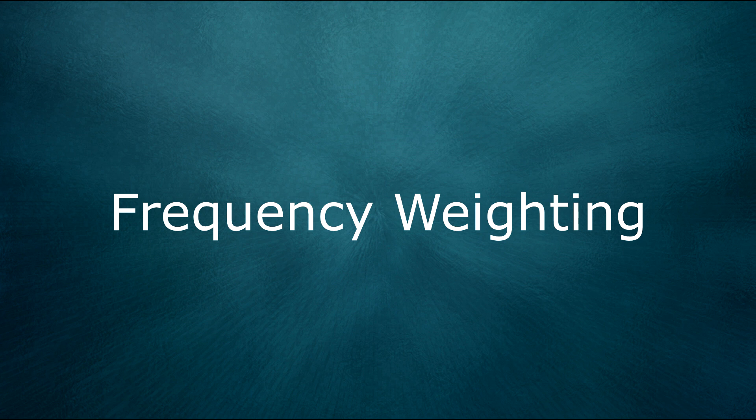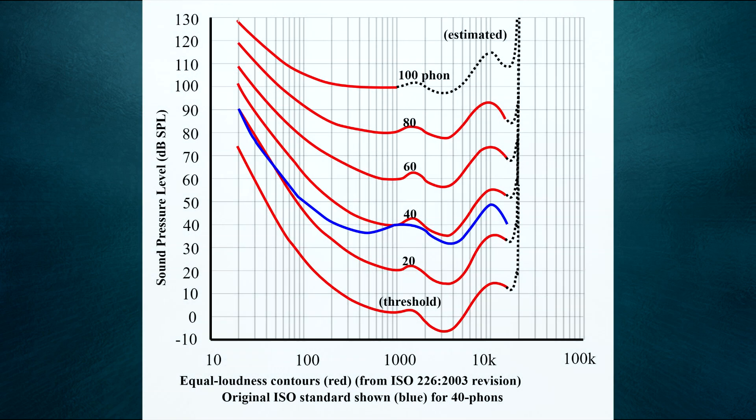One important thing to know is the frequency weighting curve used by the measurement. The tonal response of human hearing varies pretty significantly depending on the level, particularly in the low frequencies. You may have heard of the equal loudness contours, which describe this. This is one of the reasons that SPL doesn't always correlate with our perception of loudness.